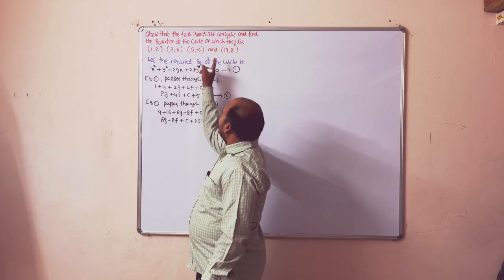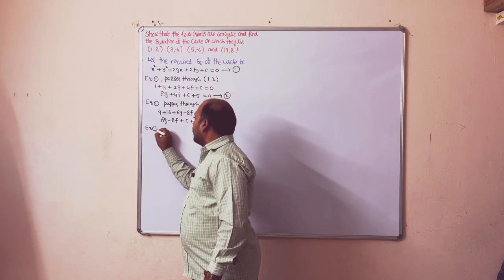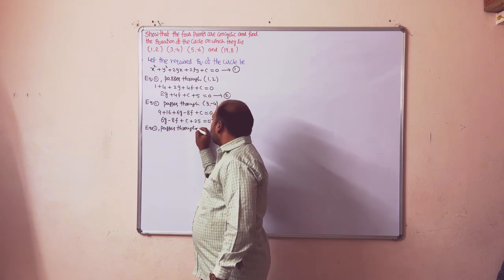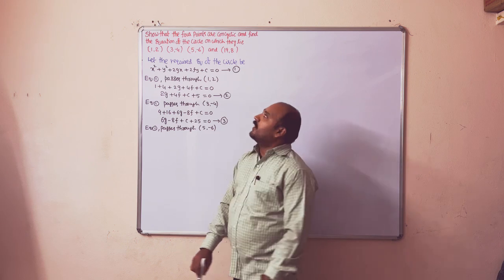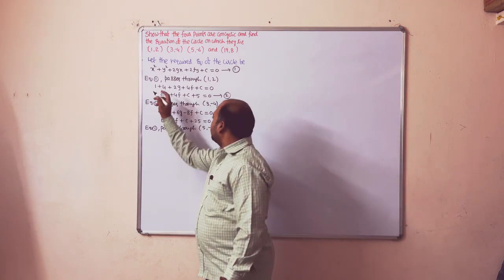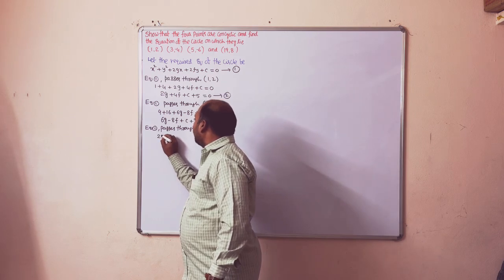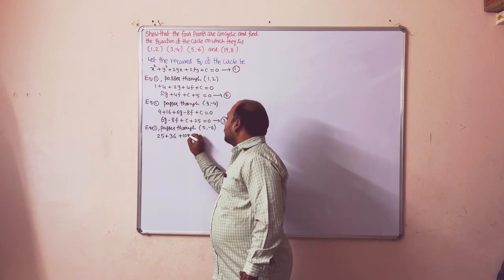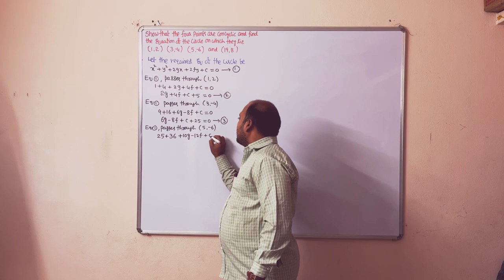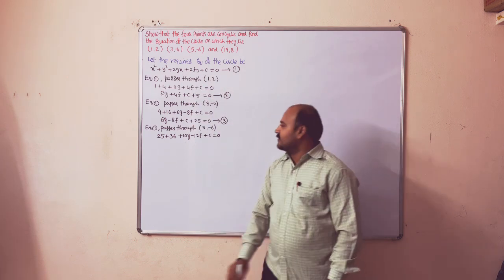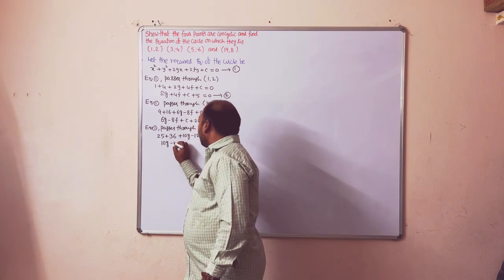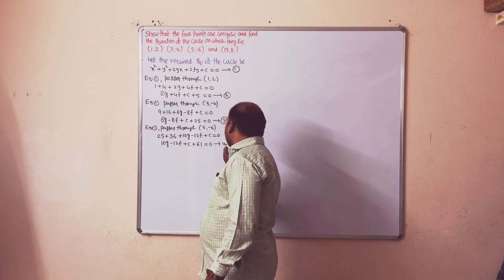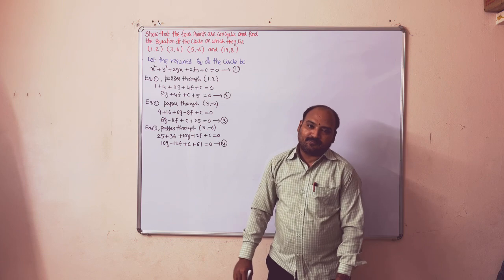Equation 1 passes through the third point (5, -6). Substituting x = 5 and y = -6: 25 + 36 + 10g - 12f + c = 0, which simplifies to 10g - 12f + c + 61 = 0. This is Equation 4.